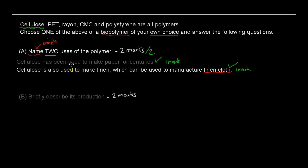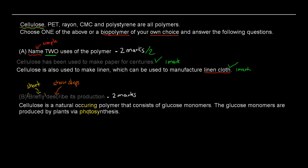Now for Part B, which says briefly describe its production. 'Briefly' just means short — you don't have to give much detail, just a short description. The key verb here is 'describe,' and that means you need to show some of the steps, or describe how you go from the monomer into the polymer. For cellulose, there are two parts to the answer.